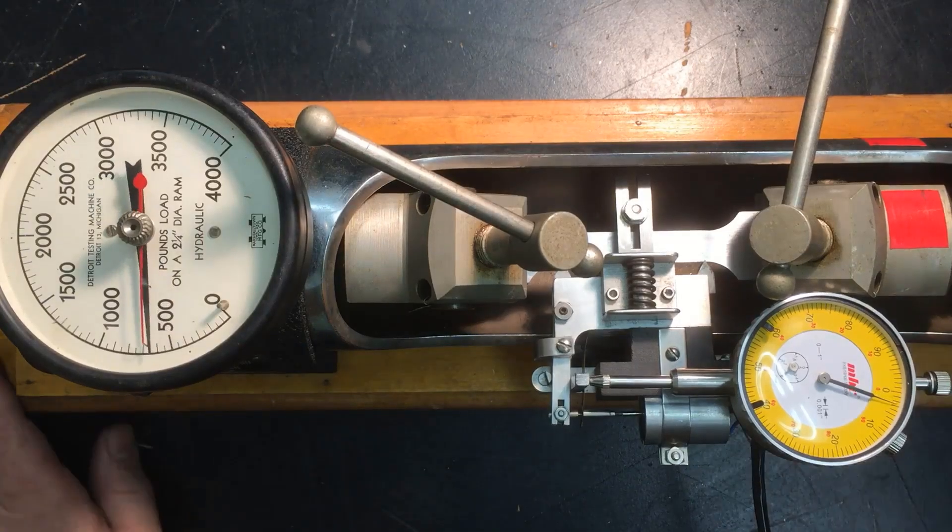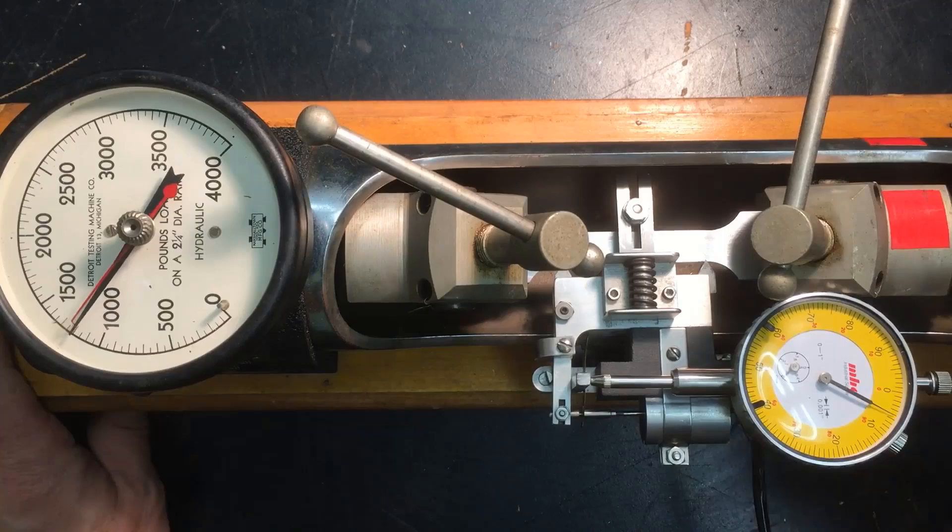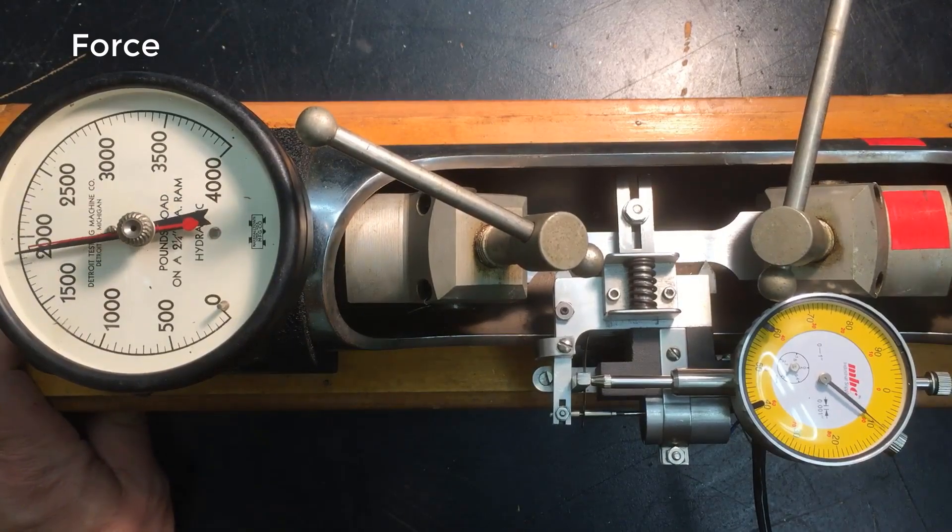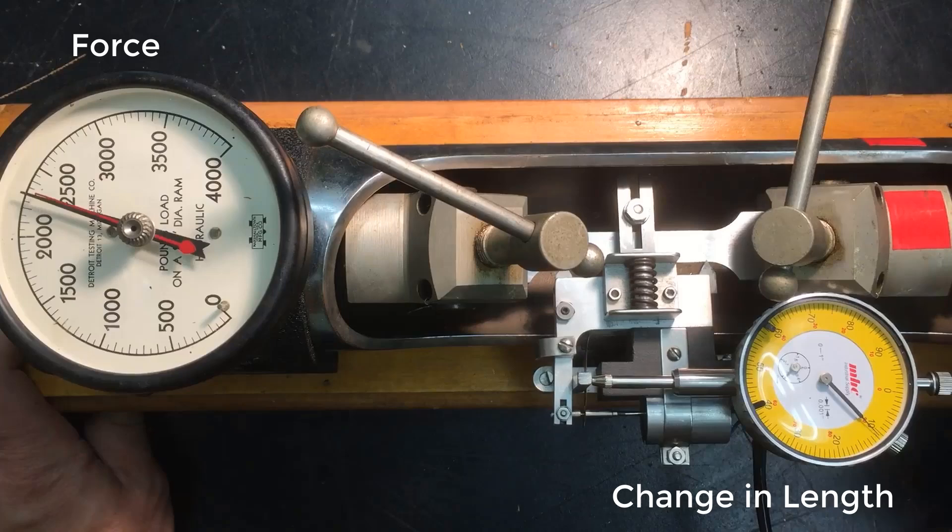Now as I begin turning the crank you can see that the value on the force gauge dial quickly rises while the dial on the extensometer barely moves.